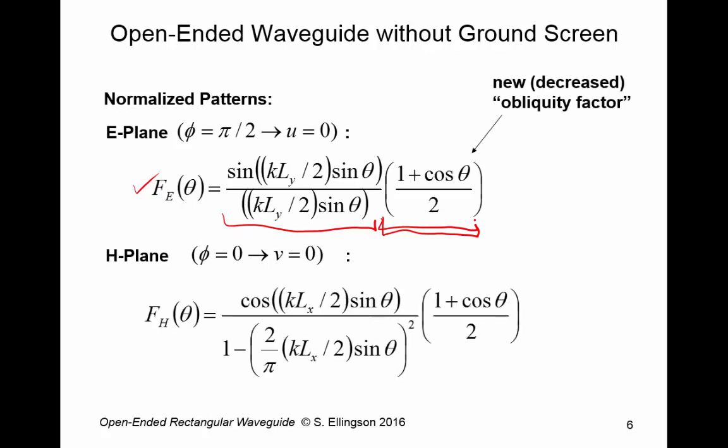Okay. Here's the H-plane pattern. Again, very similar to what we had when we had a ground screen, but the obliquity factor has changed. That was previously cosine theta. Now it's 1 plus cosine theta over 2. In fact, we have the same obliquity factor in the E and the H-planes, whereas previously we had different obliquity factors.